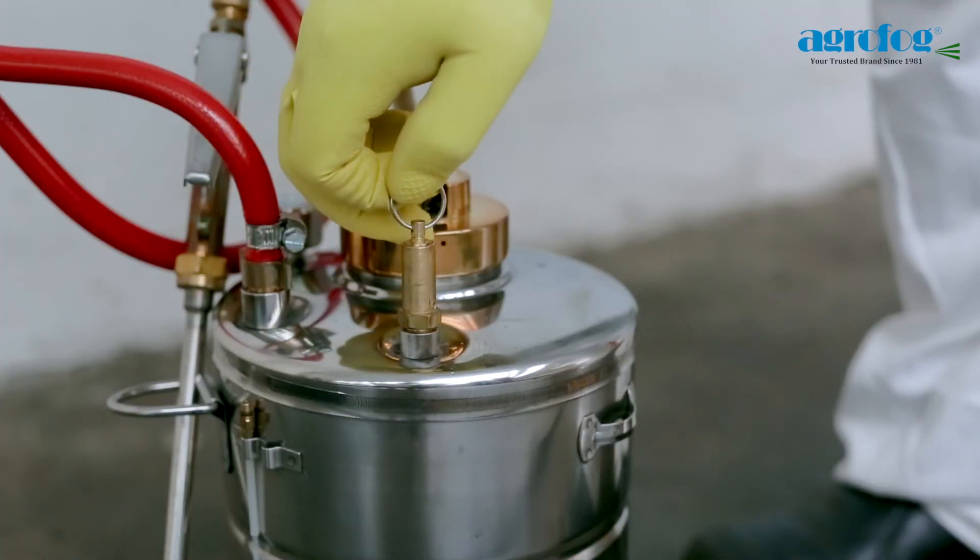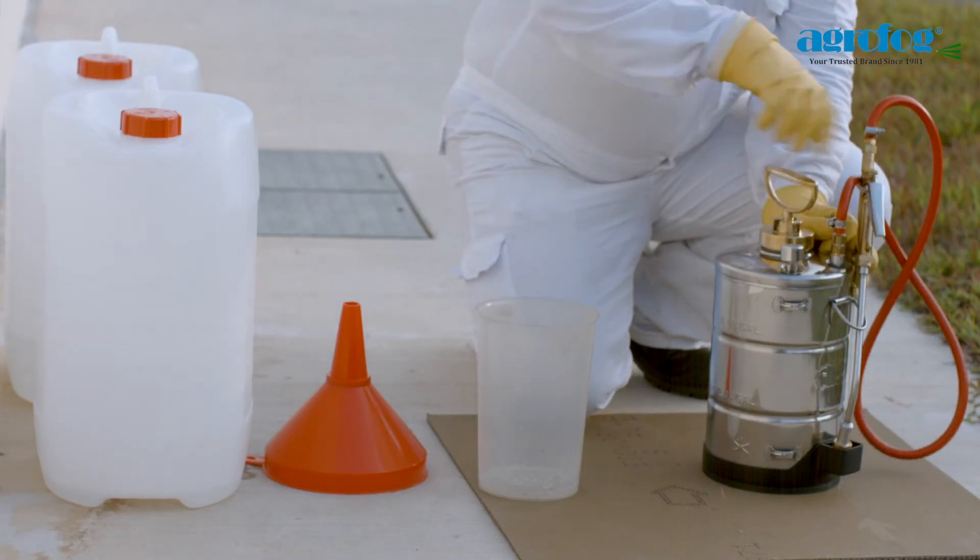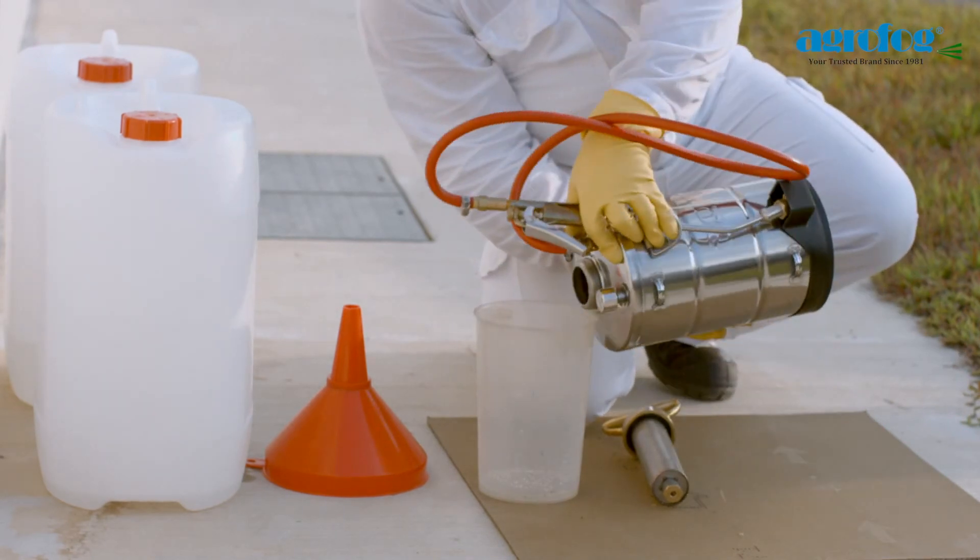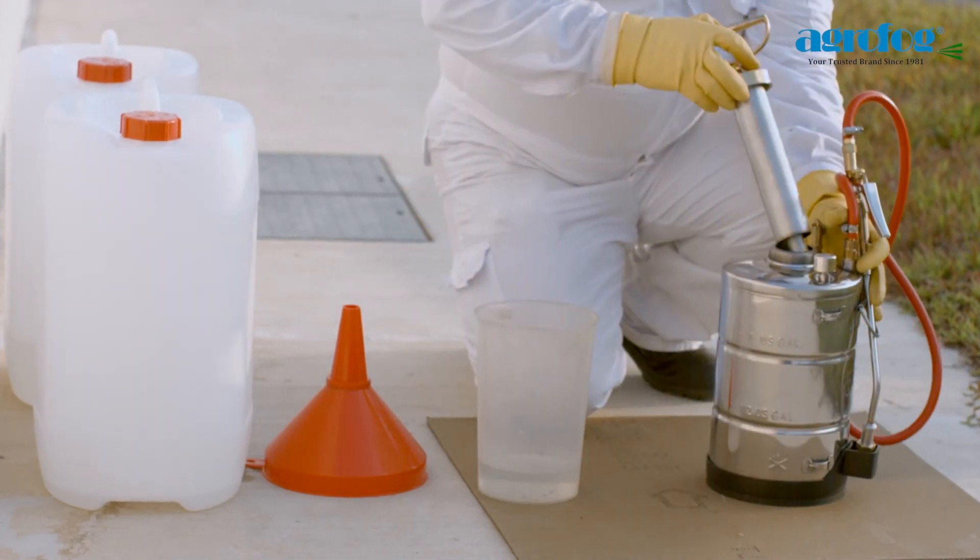Pull the pressure release valve before unscrewing the pump cylinder. Empty the tank and secure the pump cylinder. Repeat if necessary.